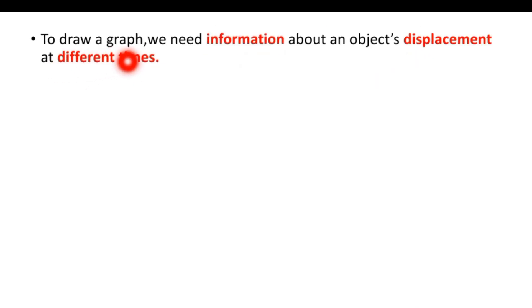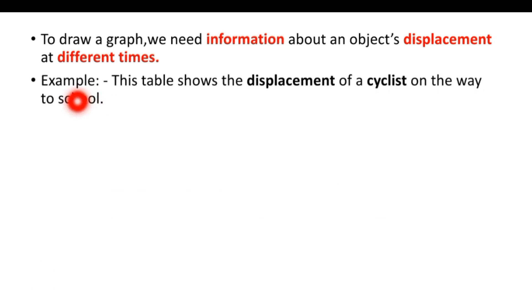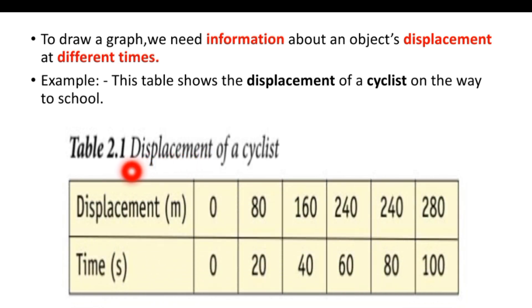To draw a graph, we need information about an object's displacement at different times. This table shows the displacement of a cyclist on the way to school. The table shows displacement of the cyclist at different times during their journey.